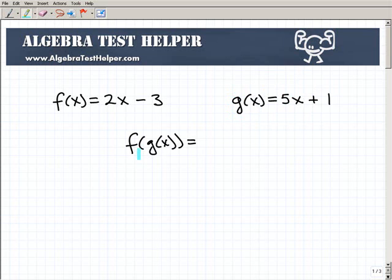f of g of x. So what does that mean? Well, what you're going to be doing is we're going to be plugging something into the f of x function. But what are we going to be plugging into that? Well, what this notation is saying is, hey, I want you to plug in the g of x function. So what's the g of x function? Well, it's this: 5x + 1. So really, this notation is asking you to find f of 5x plus 1.